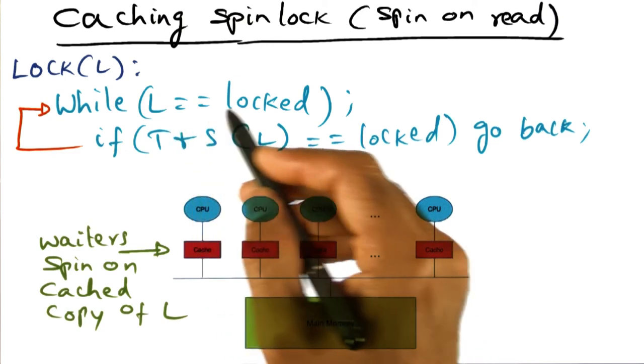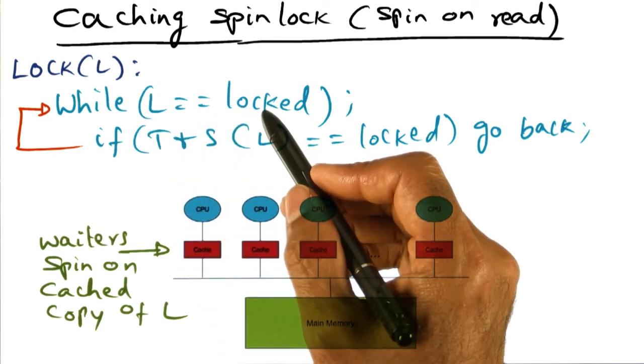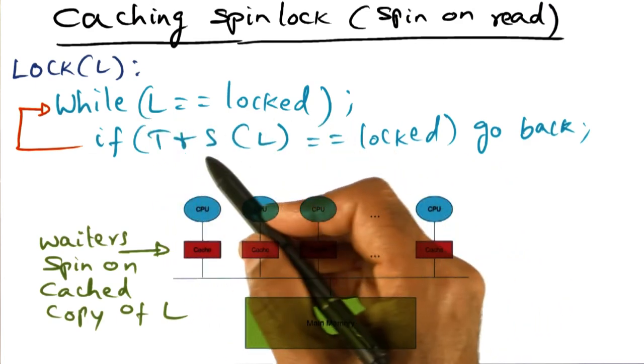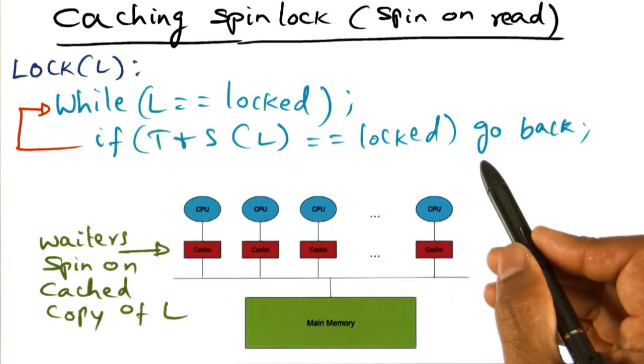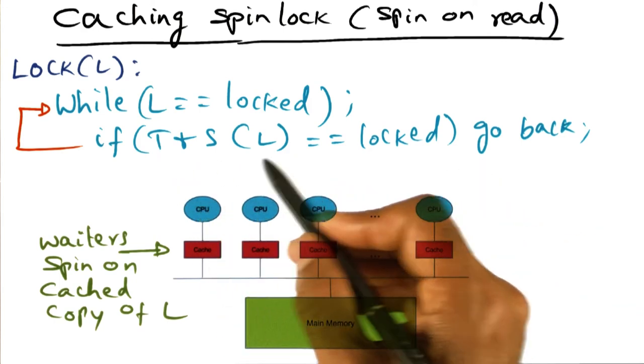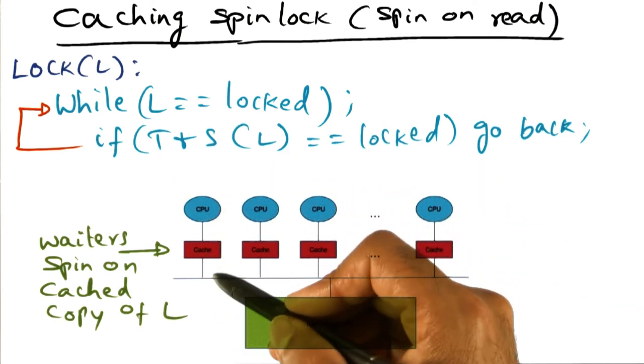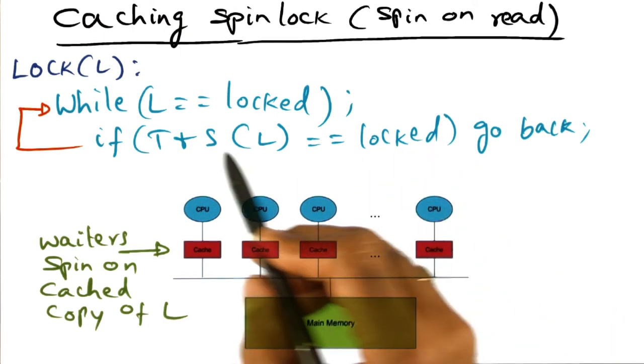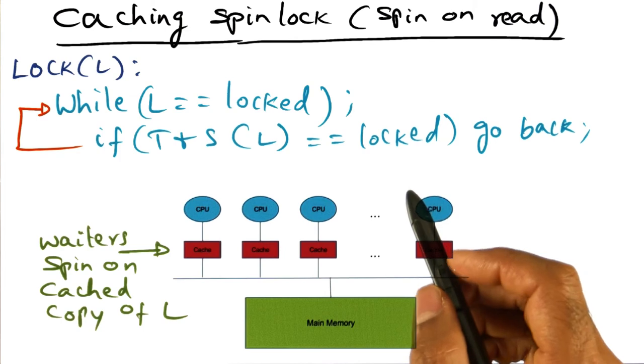But note what happens when the lock is released. When the lock is released, all the processes that are stuck here in the spin loop, they're going to go and try to do this test and set operation at the same time. And we know that test and set has to bypass the cache and everybody's hitting on the bus, trying to go to memory in order to do this test and set operation.